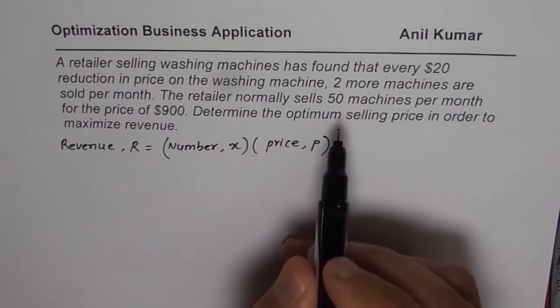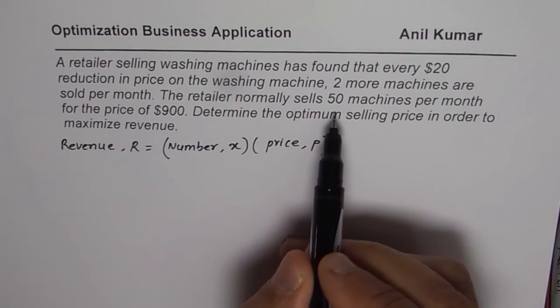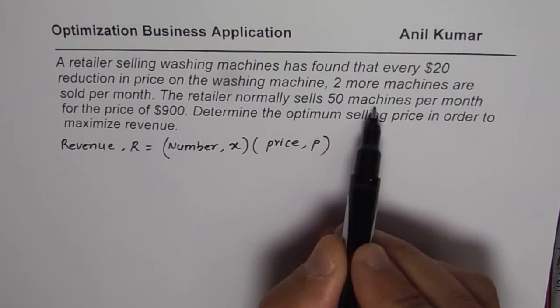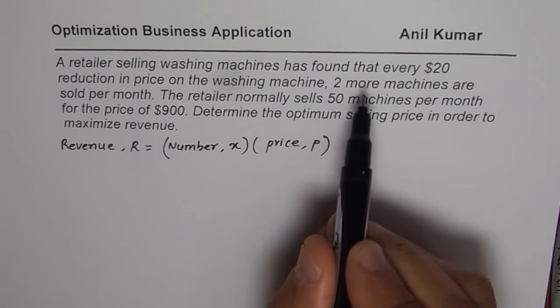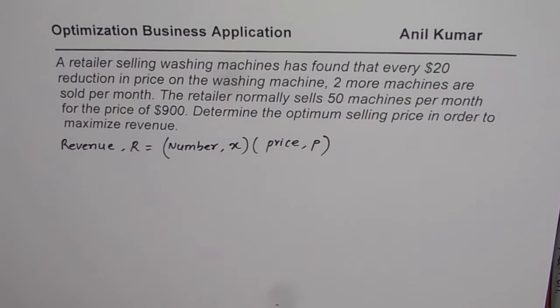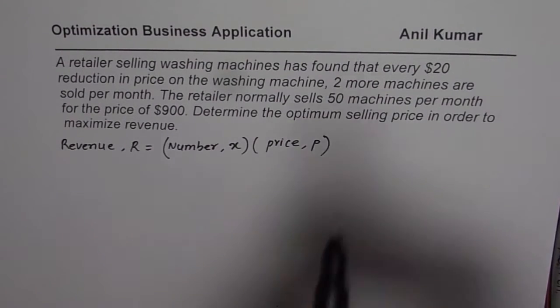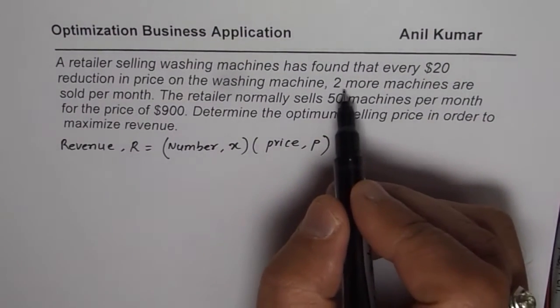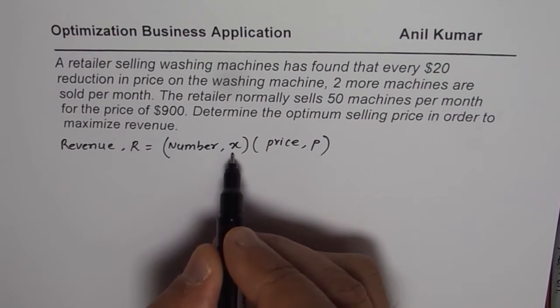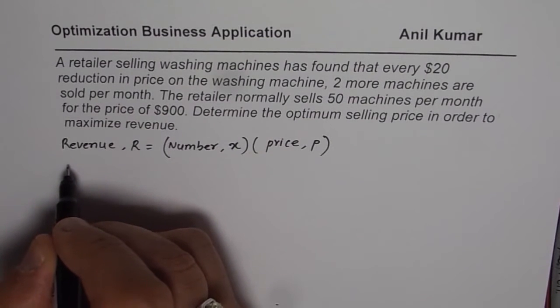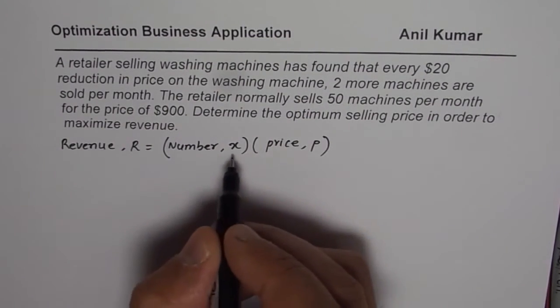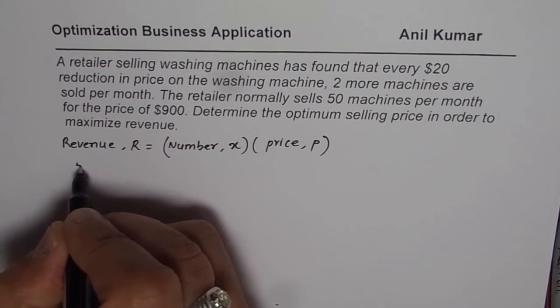Now, what we know here is that when the price is $900, then 50 machines are sold. And if the price is reduced by $20, then two more will be sold. From there, we can get a linear equation. Since for every drop of $20, two more machines are being sold, we do have a linear relation between the number of items sold and the price.